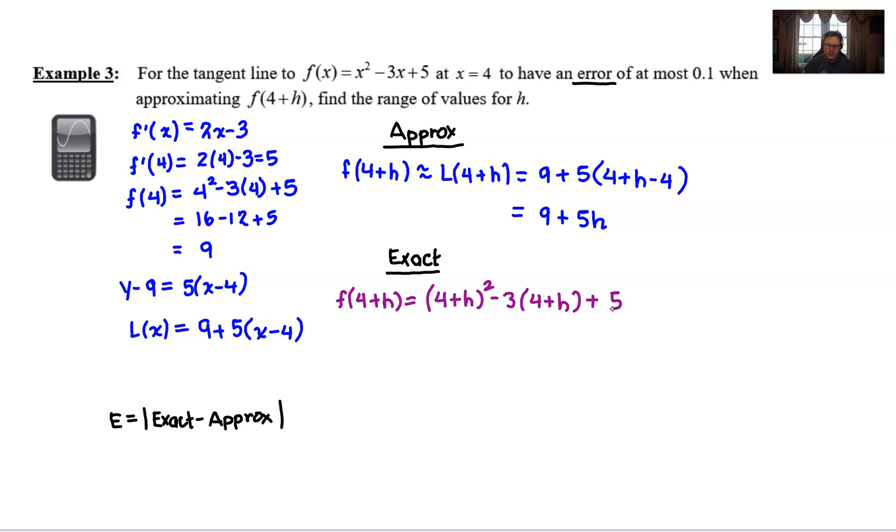So we replace all of these x's with our 4 + h. And as you can probably predict, we do need to simplify this. Probably the worst thing that's going to happen in this problem is that we would have to expand or FOIL, as we sometimes say, this binomial. In doing so, you get 16 + 4h and 4h, which is 8h, plus h² there at the end.